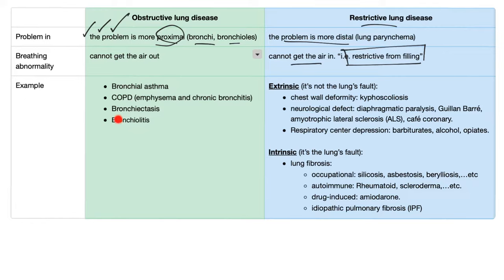Examples of obstructive lung disease include bronchial asthma, COPD, bronchiectasis, and bronchiolitis. COPD is an umbrella term that includes emphysema and chronic bronchitis. Restrictive lung disease has two main subtypes: extrinsic, which is not the lung's fault, and intrinsic, which is the lung's fault. Extrinsic causes include problems with the chest wall, neurological defects, the respiratory center, or even the abdomen — such as in cases of ascites or organomegaly.